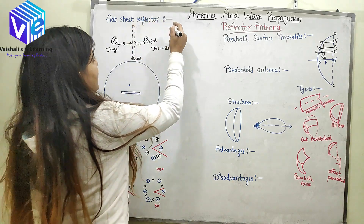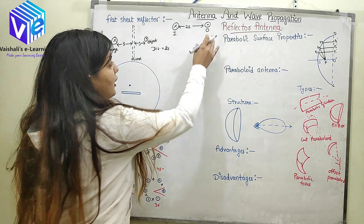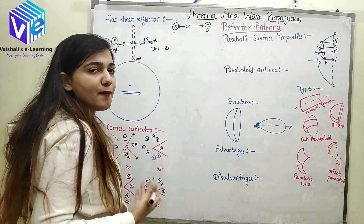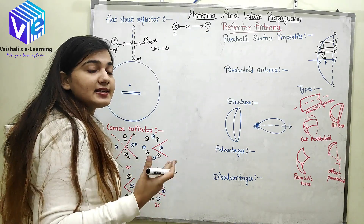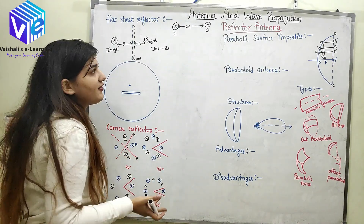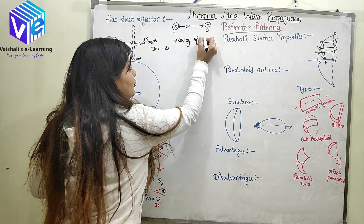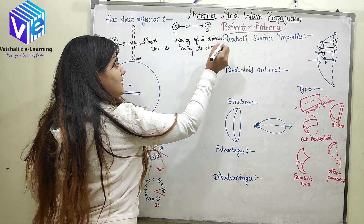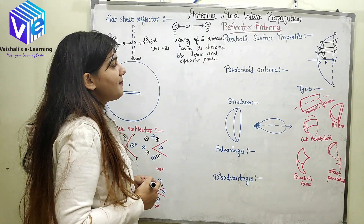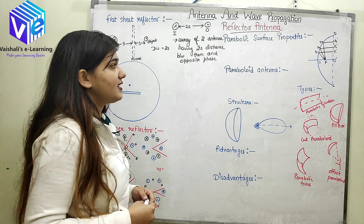If we remove the flat sheet reflector, O denotes the object antenna and I denotes the image antenna. The object and image antennas are placed 2S distance apart. The image antenna has opposite characteristics with respect to the object antenna — the image of the object antenna has reversed characteristics. So I can say that image I and object O have opposite faces with 2S distance between them, and I can treat them as an array of two antennas separated by 2S.